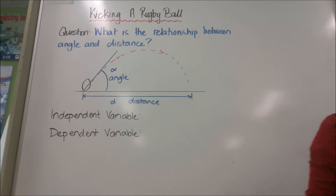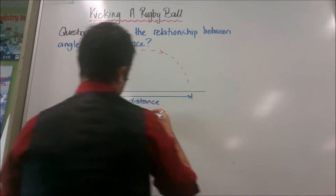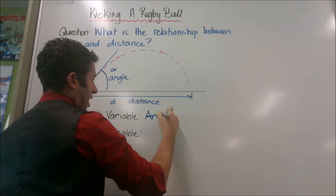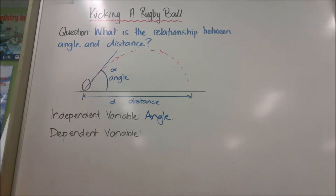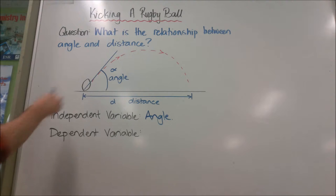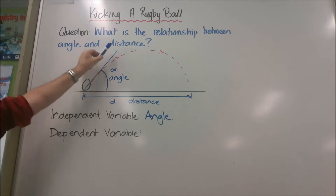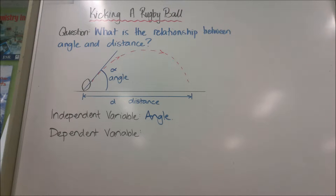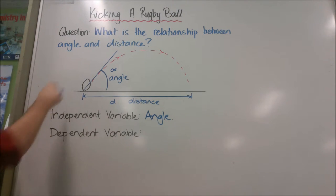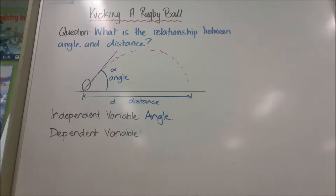So we're going to change the angle on purpose so we're going to think about how we're going to do that. How could we change the angle on purpose? So you're talking about the angle the ball is at, yeah okay. What we're going to look at rather than the angle of the ball is we're going to look at the angle that it leaves the tee at.